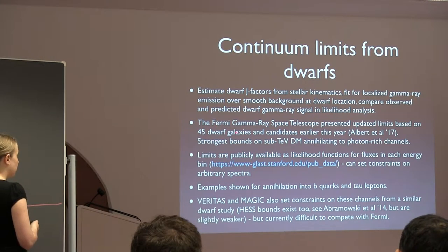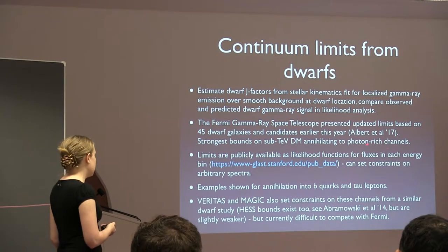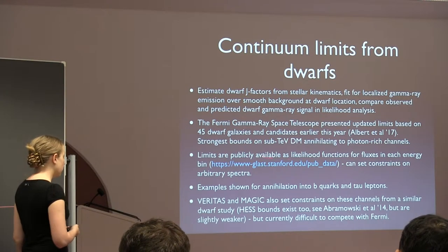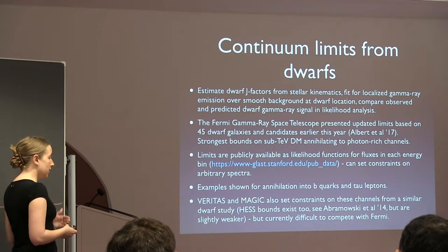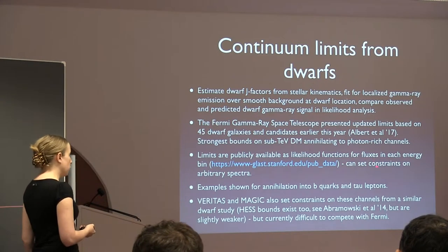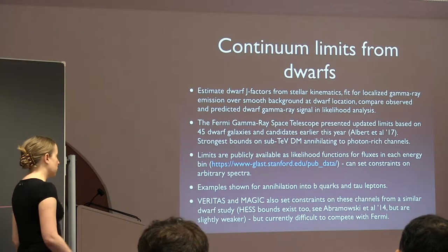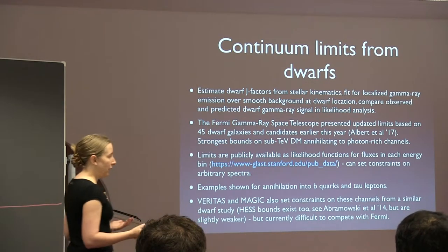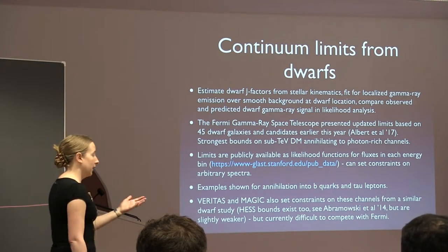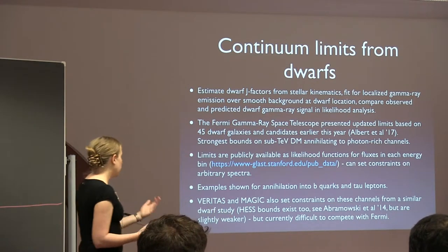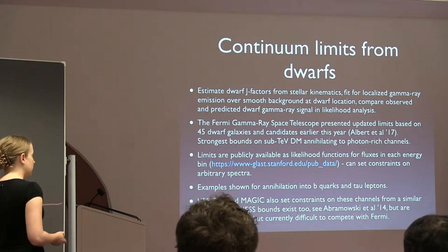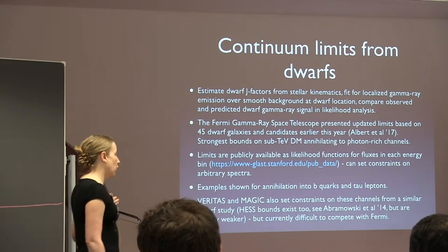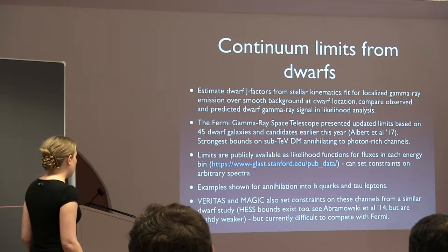The Fermi collaboration presented limits based on 45 dwarf galaxies and candidate dwarf galaxies. To my knowledge, these are the strongest robust bounds on sub-TeV dark matter annihilating in photon-rich channels. The likelihoods for each individual dwarf in each energy band are all available publicly. If you have a dark matter model with some specific combination of final states — like annihilation into a dark photon mediator that decays back to the standard model — you can just download these constraints and set limits on whatever spectra you're interested in.